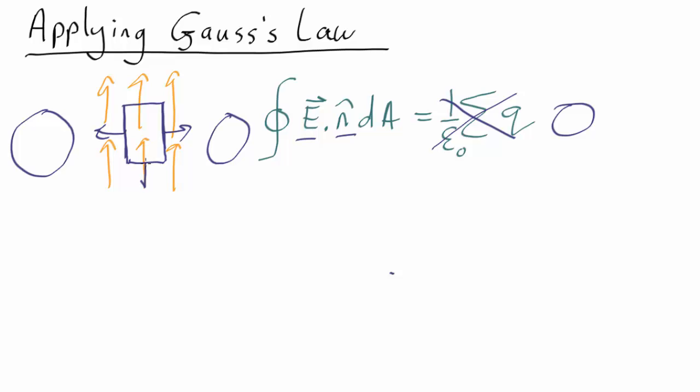At the bottom, the normal vector points down, the electric field points upwards, so you get an area times the electric field strength, but it's minus. At the top, they point in the same direction, so you get plus area times the electric field strength, which is, of course, 0. So, because the electric field is uniform and all pointing in the same direction, it does indeed obey Gauss's law.